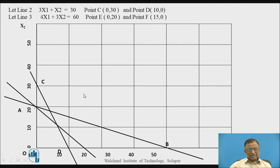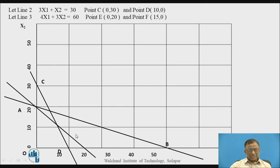Now we must account for the inequality signs in each constraint. For line 1 (AB), it has a less-or-equal sign, so any point on the line or below the line satisfies that constraint. For line 2 (CD), the constraint is greater-or-equal, meaning any point on the line or above the line satisfies it. For line 3 (EF), it is also greater-or-equal, so again any point on the line or above the line is a solution. We must find the common region that satisfies all equations and search for the optimal solution there.